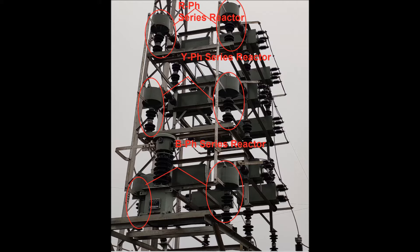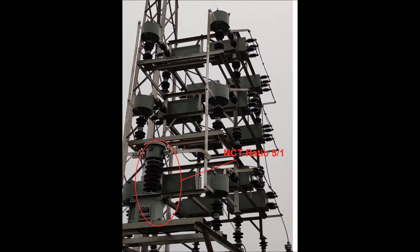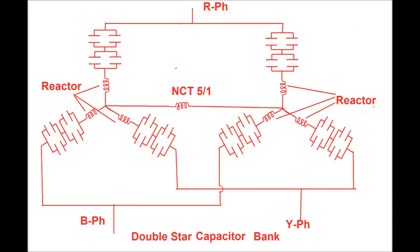In this diagram, the series reactor in each phase and each star has been shown. Since it is double star connected, the number of series reactors is six. The NCT (Neutral CT) has also been shown. The ratio of the NCT here is 5/1, although it may be 2/1 or 3/1. The equivalent circuit of the double star capacitor bank is shown, with the NCT connected between the star points.